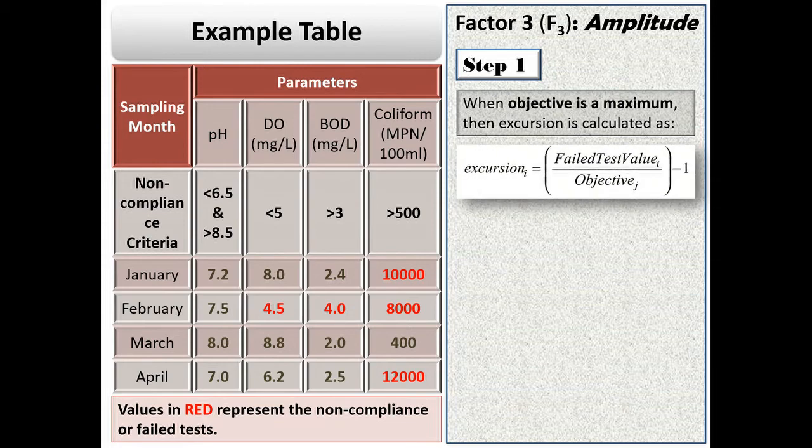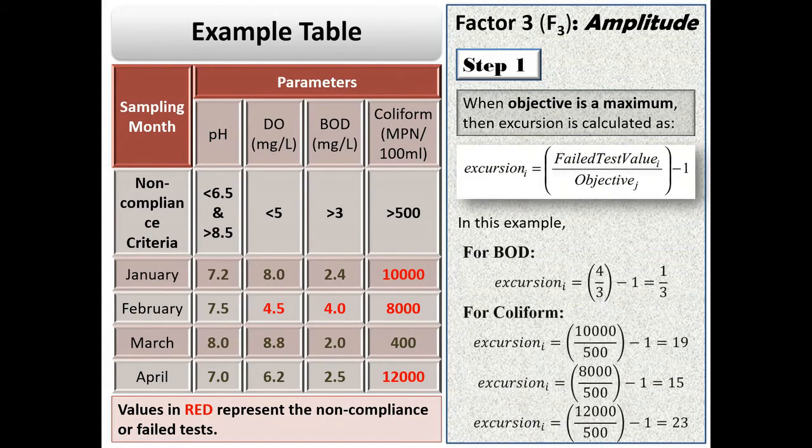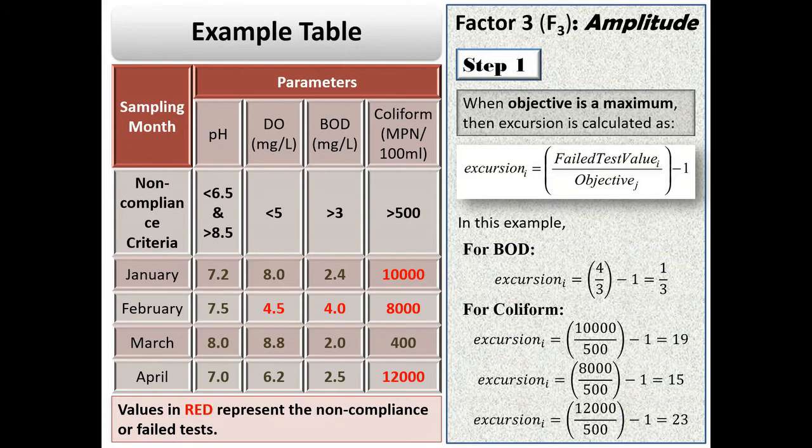When the objective is a maximum, for example in case of BOD and coliform count, in such cases the formula for excursion will be (failed test value/objective) - 1. In case of BOD, there is only one failed test value of 4, therefore excursion = (4/3) - 1 = 1/3.